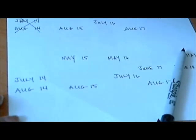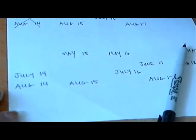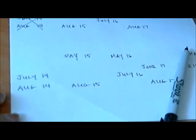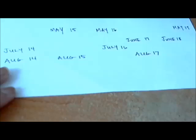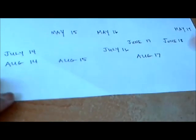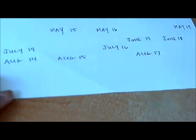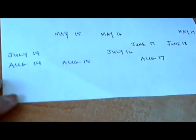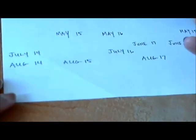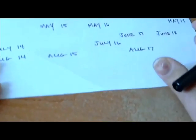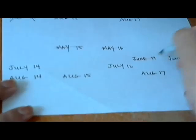Albert says: I don't know when Cheryl's birthday is. Albert knows the month, but I know that Bernard does not know either. Looking at this, if he knows that Bernard could not know by the number date, you have these outliers — May 19th and June 18th, where there is no other date with that number. So if Albert knew it was May or June, he couldn't make that statement. So we know it can't be May or June.